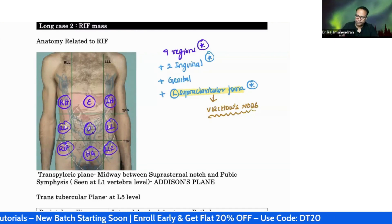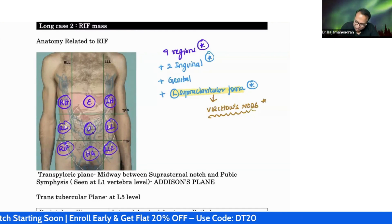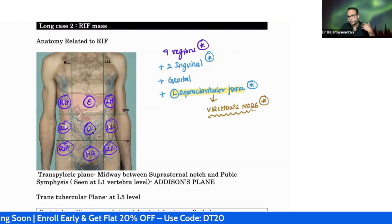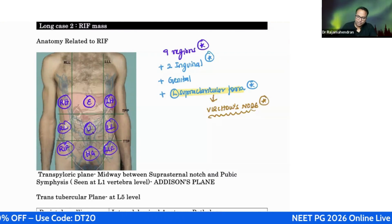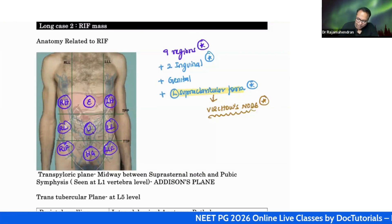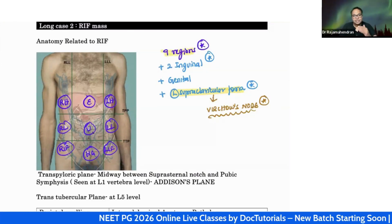In a clinical case examination, if a patient has a Virchow's node and you miss it, you are in trouble. Missing a Virchow's node is always a major risk in clinical case examination. So examine all nine regions and never forget the left supraclavicular fossa.